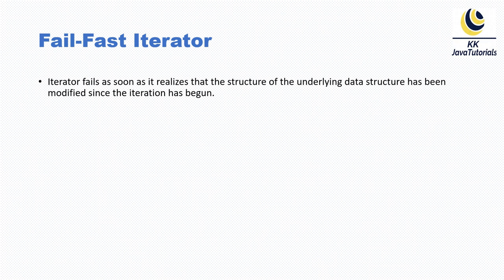First, let's understand what is a fail-fast iterator. An iterator fails as soon as it realizes that the structure of the underlying data structure has been modified since the iterator has begun. Once you create an iterator from a collection — say you have an ArrayList and you call the iterator method on it — while iterating, if another thread tries to add or remove any elements from the underlying collection, you'll immediately get a ConcurrentModificationException.